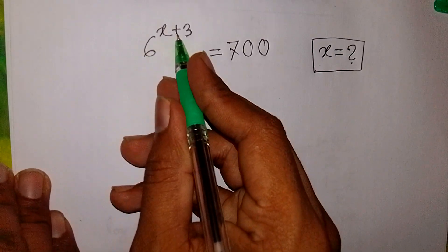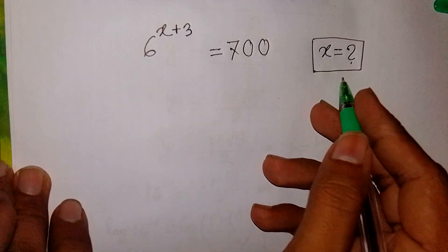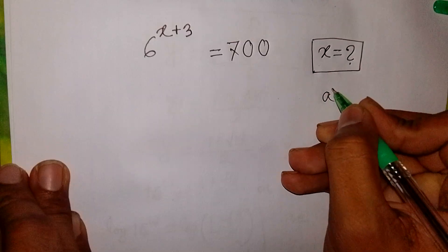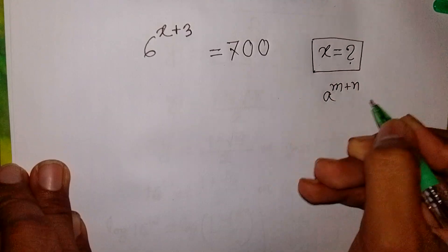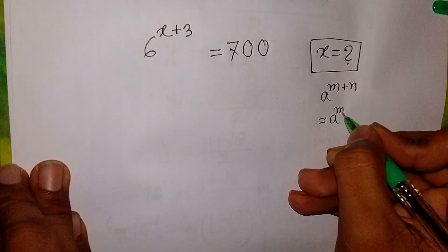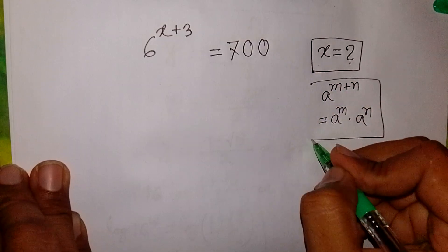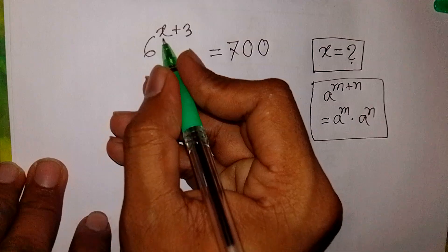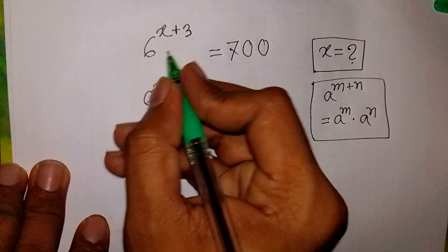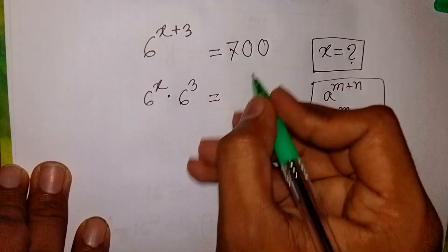6 to the power of x plus 3 is equal to 700. Find the value of x. Here we apply the exponential rule that a to the power of m plus n is equal to a to the power m times a to the power n. So it will be 6 power x times 6 power 3 is equal to 700.